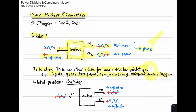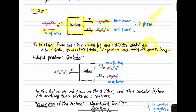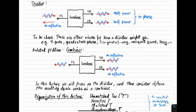Instead, we'll focus on this particular application. A related problem is the combiner, which could be the same device. Except now we apply signals to ports two and three, preferably without reflection, and on port one we see those two signals simply added together. In this lecture, we're going to focus on the divider, but at each point we'll ask ourselves: could the divider we're considering also work as a combiner? And we'll see that in some cases it can.